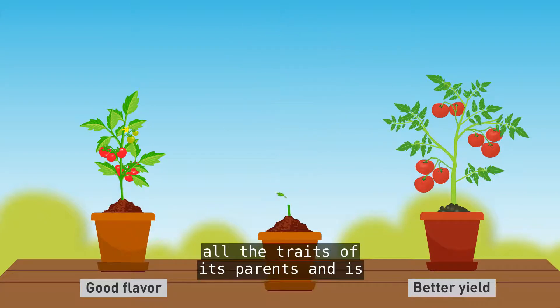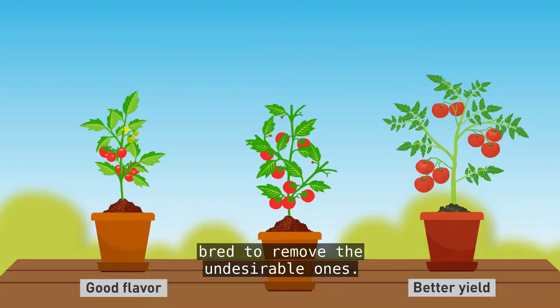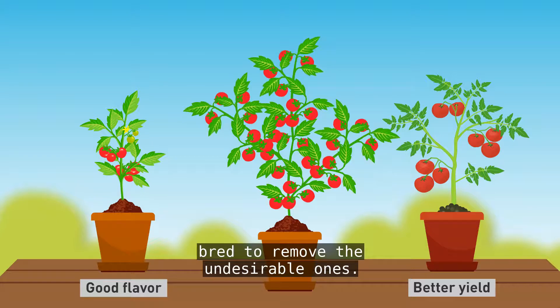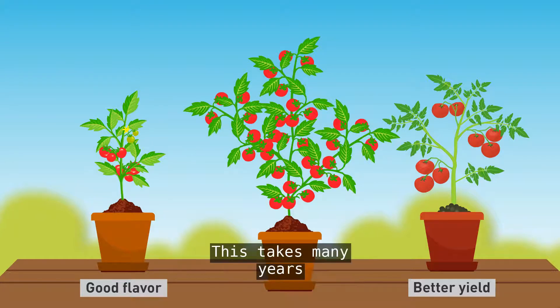The plant from the first cross has all the traits of its parents and is bred to remove the undesirable ones. This takes many years.